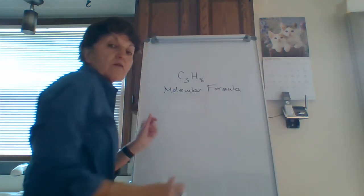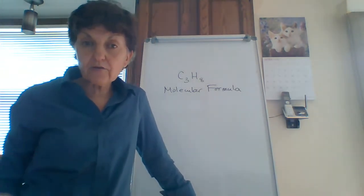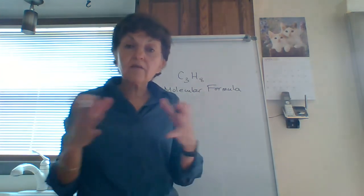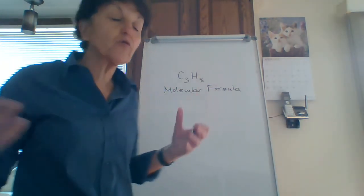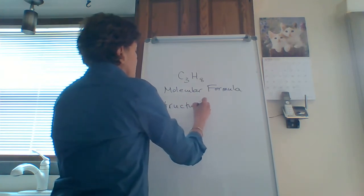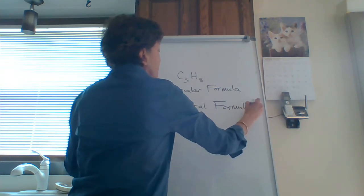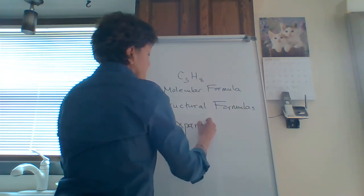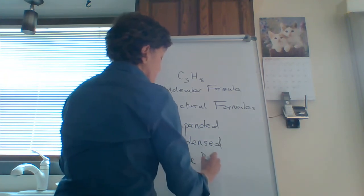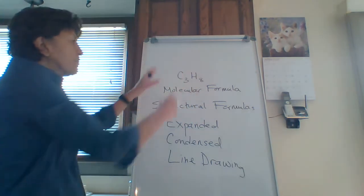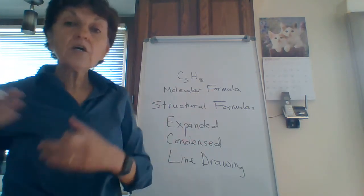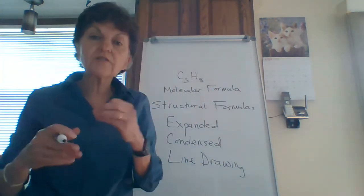If you remember from intro chemistry, you used to do something called a molecular formula. It tells you that in this formula there are three carbons and eight hydrogens — great, but it doesn't tell you how they're connected to each other. So in organic chemistry, what we like to do is create structural formulas. There are different types of structural formulas to show the structure and how everything is connected. We're going to learn three types: expanded, condensed, and line drawing.